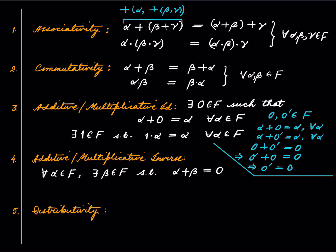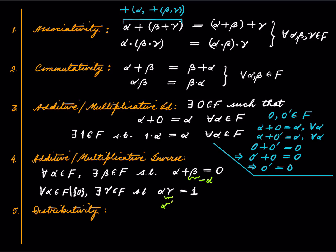Similarly, we insist that for all non-zero α in F there exists γ in F such that αγ = 1, where 1 is the multiplicative identity, which we can argue is also unique. The additive inverse β is written as −α, and the multiplicative inverse γ is written as α⁻¹ or 1/α. One can argue by similar reasoning that the multiplicative inverse is unique.